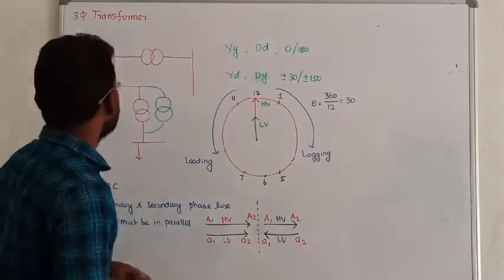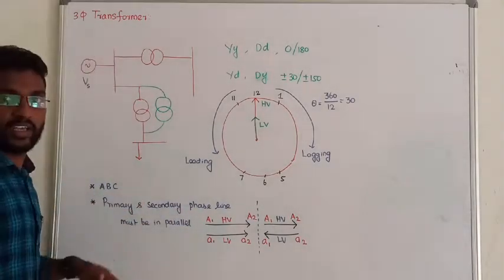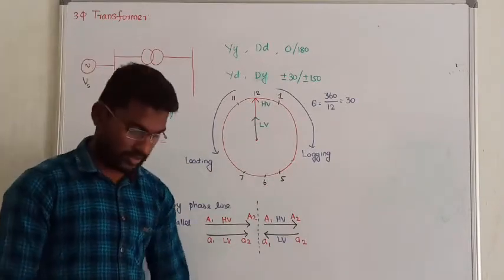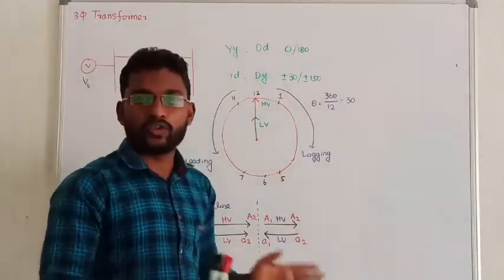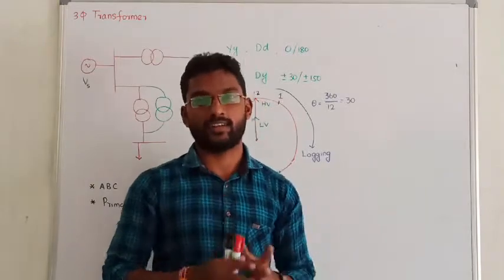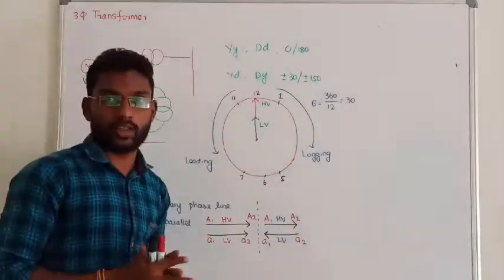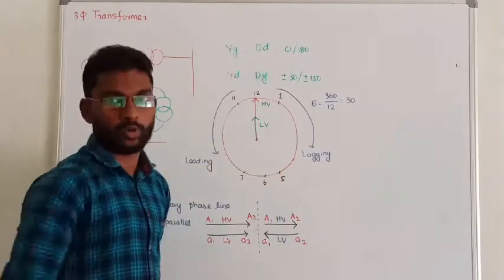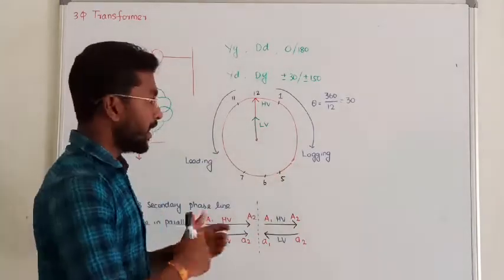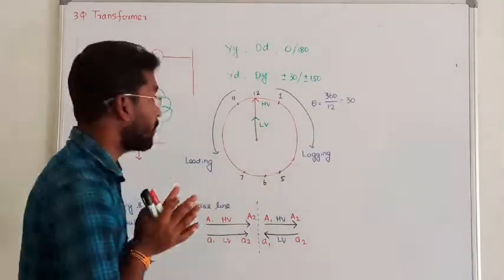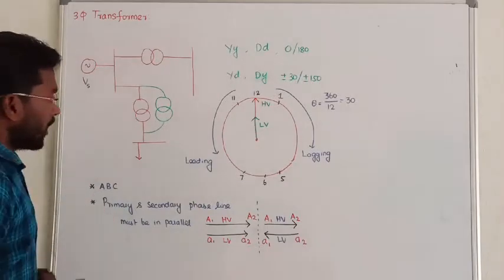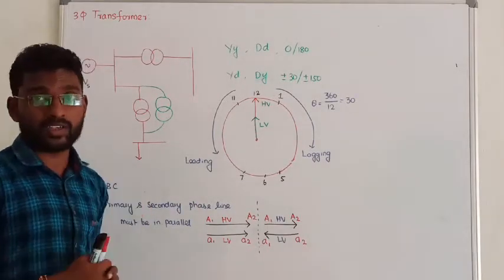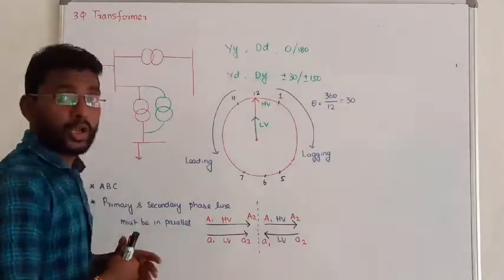Hello guys, next we are going to see the various types of connections in three-phase transformers. What we are going to do with the windings — we are going to connect them with star and delta, and the sequence that we are going to connect with the three-phase system.